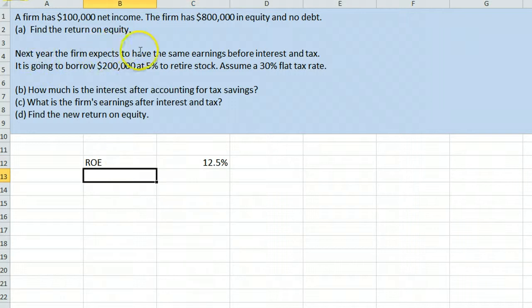It's then saying that the firm is going to have the same earnings next year before interest and tax, which is the $100,000, but it's going to borrow $200,000 at 5% to retire stock. This is the leverage. It is going to take on $200,000 in debt. It's going to use it to retire $200,000 worth of stock, meaning there will only be $600,000 in equity, and we're going to assume a 30% flat tax rate just to keep things easier.